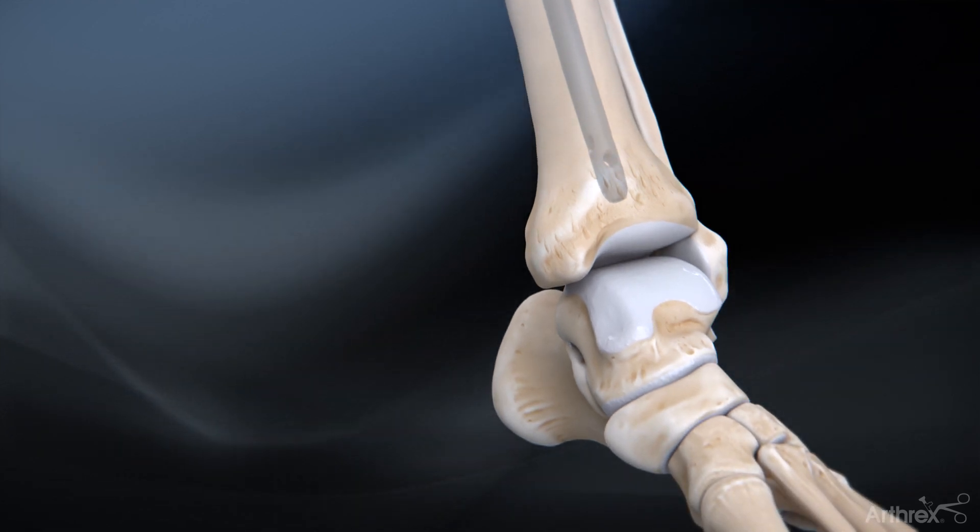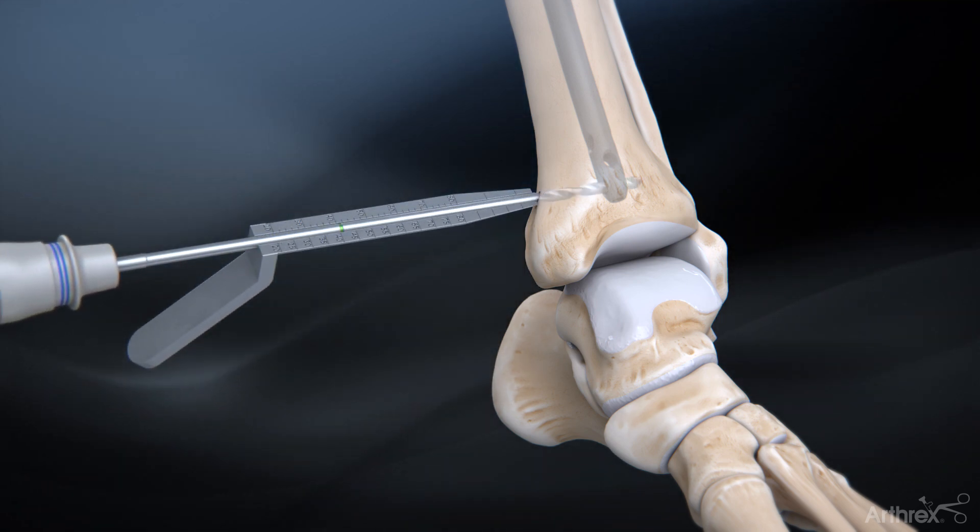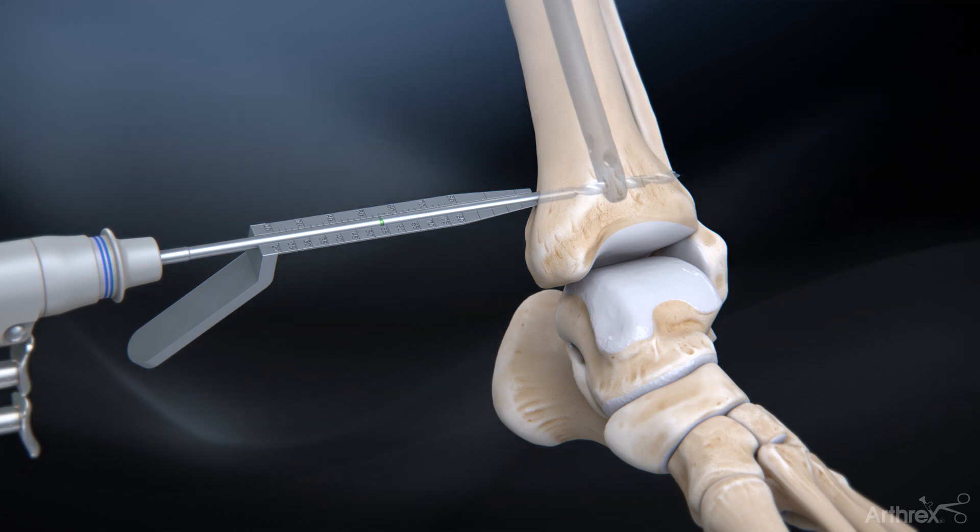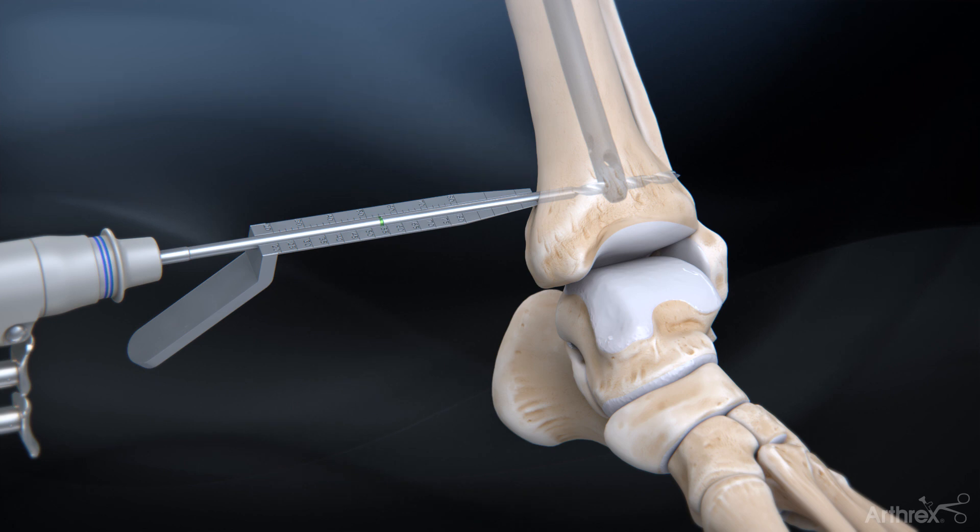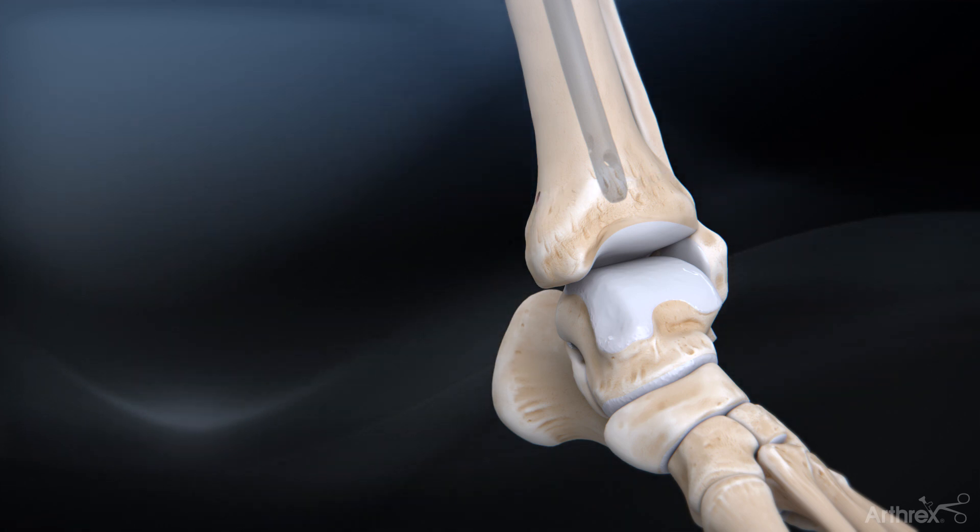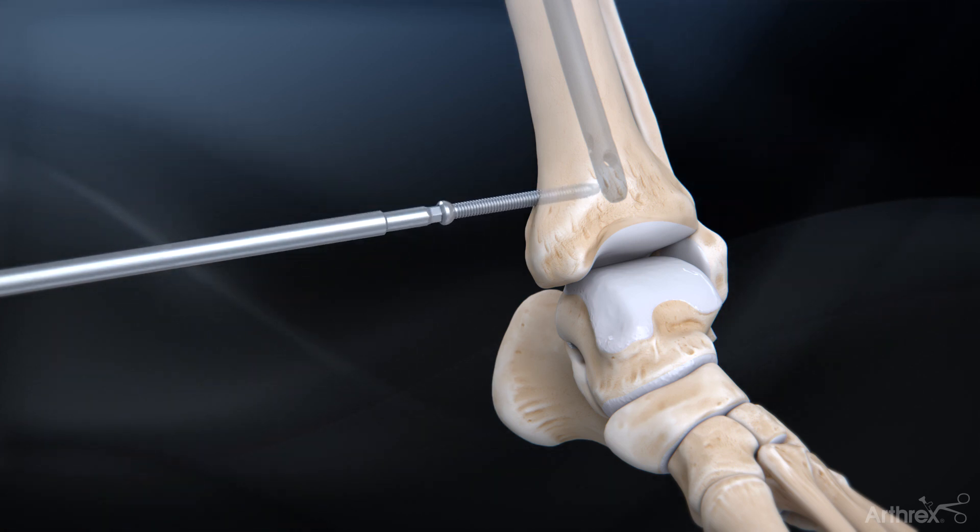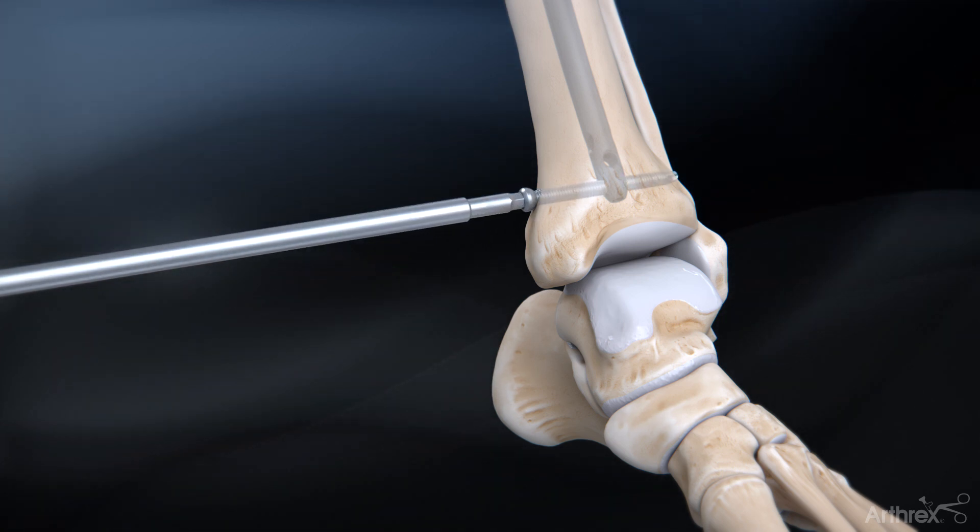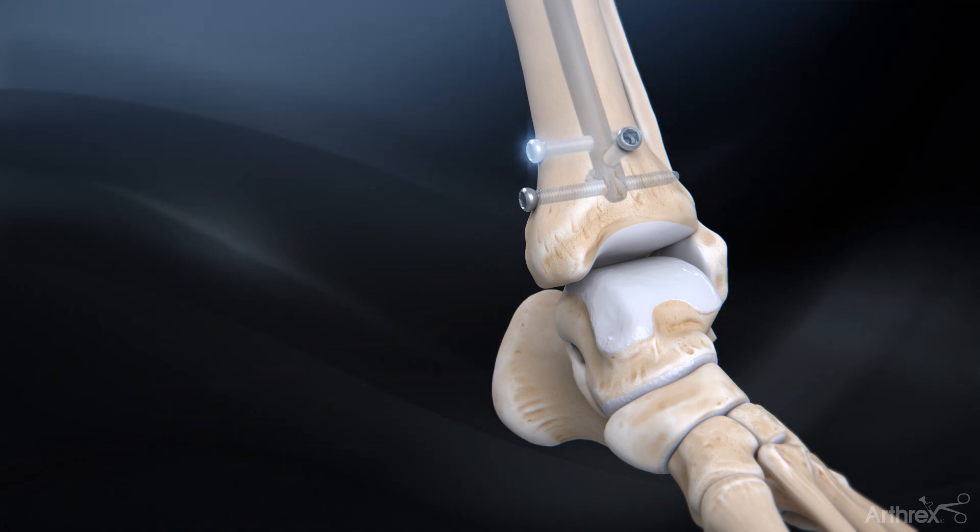For distal fixation, the screws are targeted using fluoroscopy. Drill bicortically through the bone using the 4.0 mm freehand drill. Measure the screw length using the distal depth gauge and the depth mark at the 4.0 mm freehand drill. Advance the desired screw to the captured driver until it's secured in the bone. Repeat the steps to place the additional distal screws.